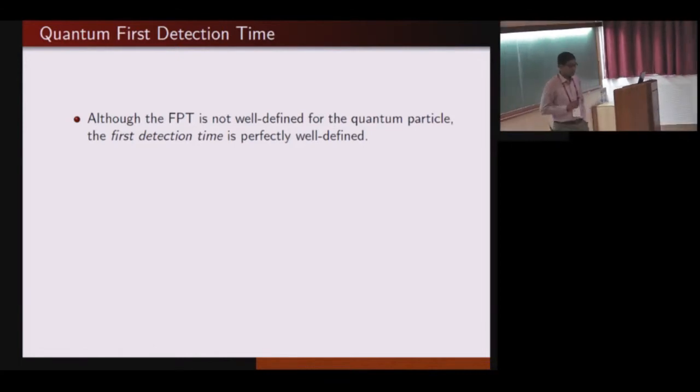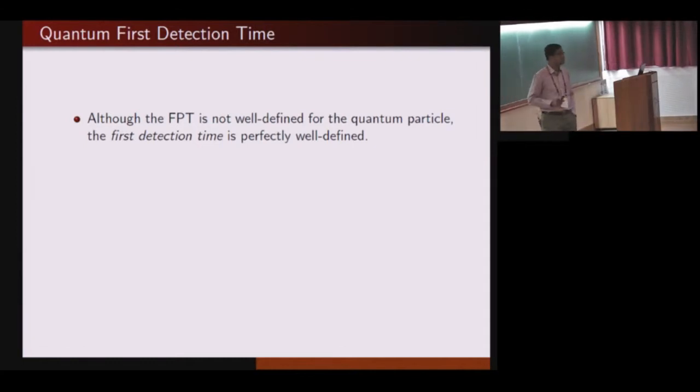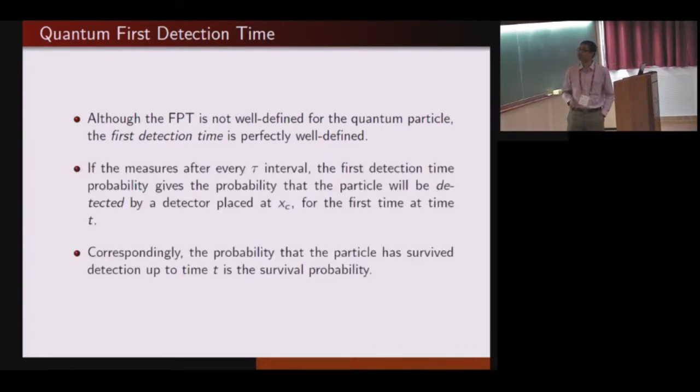This is unambiguously defined. In place of the tagged lattice site, we place one detector which performs projective measurements after every small interval of time. As soon as the detector detects the particle, the experiment is stopped, the particle gets killed. This is also a random process. For every experiment, this is the inherent quantum randomness. The system is closed, so there is no external noise. We can generate the first detection time probability and the survival probability that the particle has survived up to some time t.